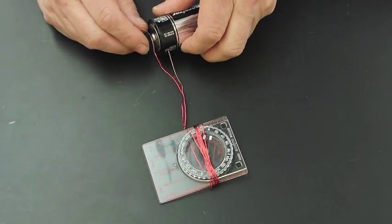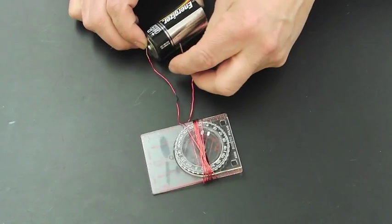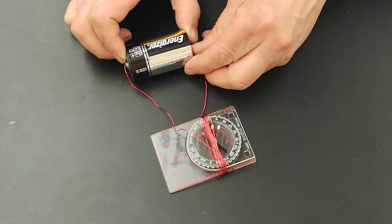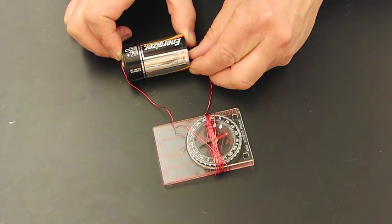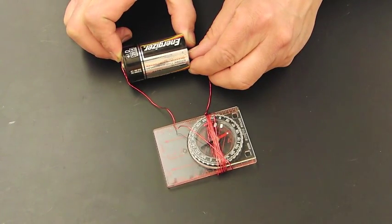Now when I hook up a battery to it, we see that the needle moves directly perpendicular to that coil of wires.